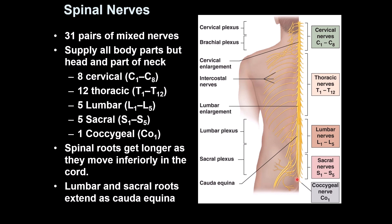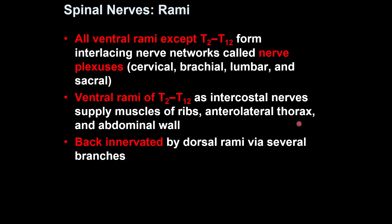The spinal cord ends around this area. Now, what about the ventral rami? This is important: ventral rami create a network of nerves called plexuses. There are four of them: cervical, brachial, lumbar, and sacral.